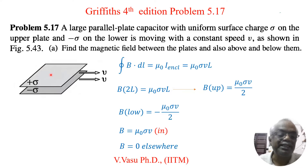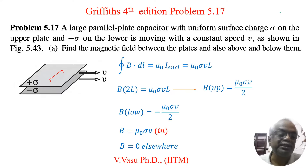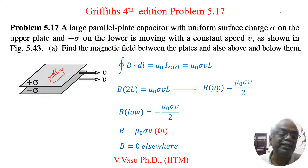First, consider the upper plate and form an Amperian loop. I am forming an Amperian loop with a small length DL. Similarly, there is a similar structure below — I have taken an Amperian loop. This is above and below this plate.